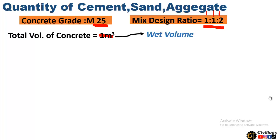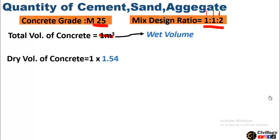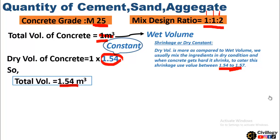Wet volume means that when the concrete hardens and the formwork is removed, the total volume will be 1 cubic meter. For calculations we use dry volume of concrete — when the ingredients cement, sand, and aggregate are in dry form, they occupy more space compared to wet concrete. This factor is called the dry constant, 1.54. So the dry volume of concrete equals 1.54 times the wet volume. This value ranges between 1.54 to 1.57. The total dry volume for our calculations is 1.54 cubic meters.